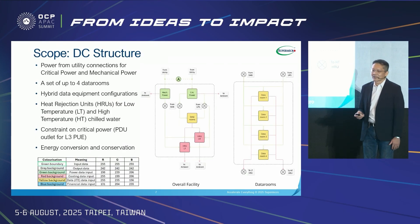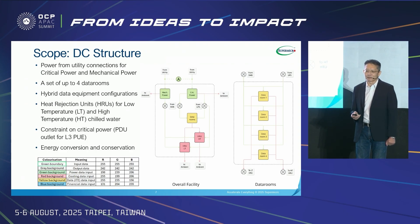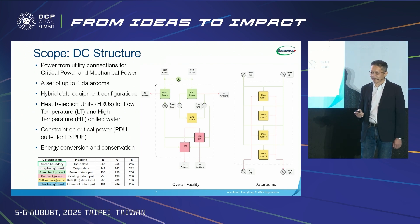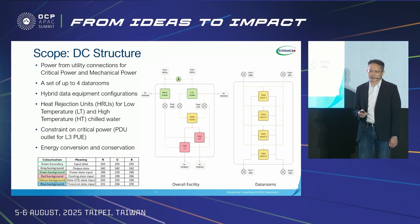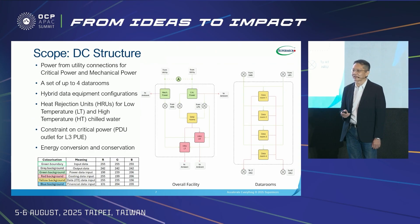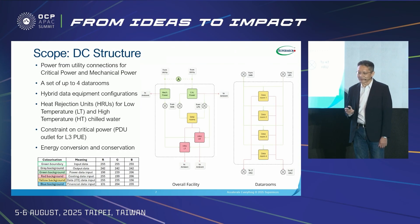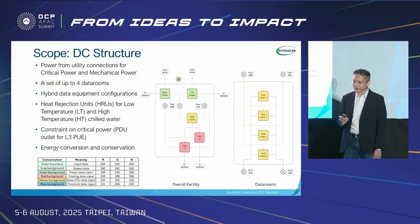Essentially, the model solves a set of energy conservation equations for the facility, accounting for the performance and efficiency of each process and sub-process contained within. There are 66 equations being solved simultaneously. This is the reference architecture, with power — shown as green arrows — from utility connections for critical power and mechanical power, a set of up to four data rooms, including red arrows for heat flows via two pathways, and heat rejection units (HRU) for low-temperature and high-temperature chilled water.